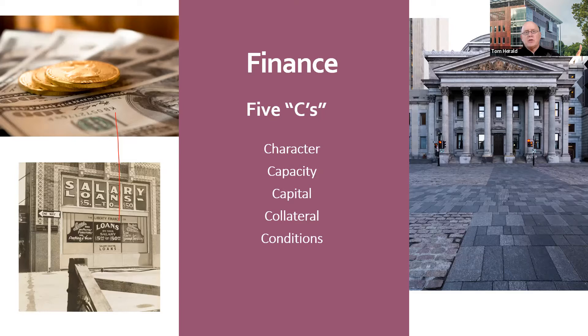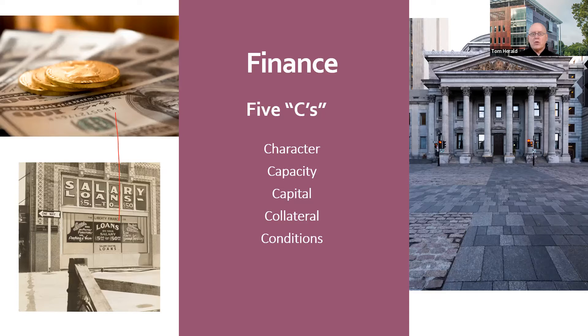Finance and accounting go hand in hand but are completely separate entities. Finance is basically managing cash flow — applying for grants, loans, and so on. You'll hear the term the Five C's of Finance. These are five areas bankers look at when considering a loan — and the SBA says they look at the same things for grants. The first C is Character, tied to your credit score. Building a credit score takes a long time, and it's quick to lose — it reflects your willingness and ability to repay loans.